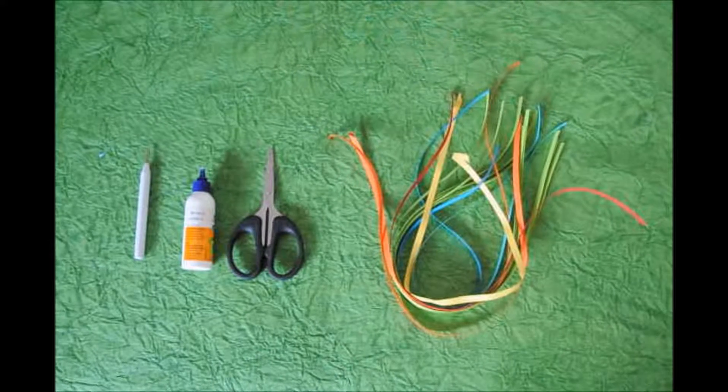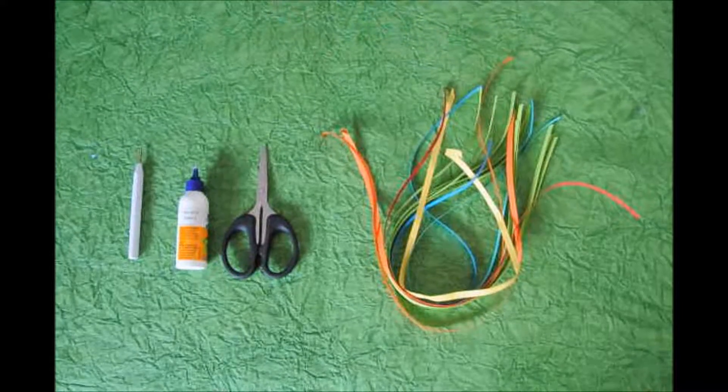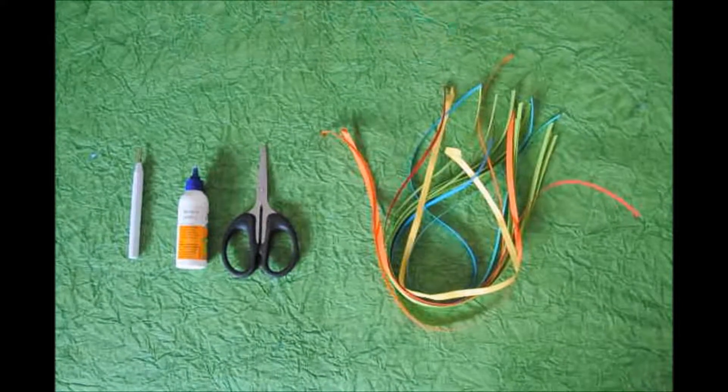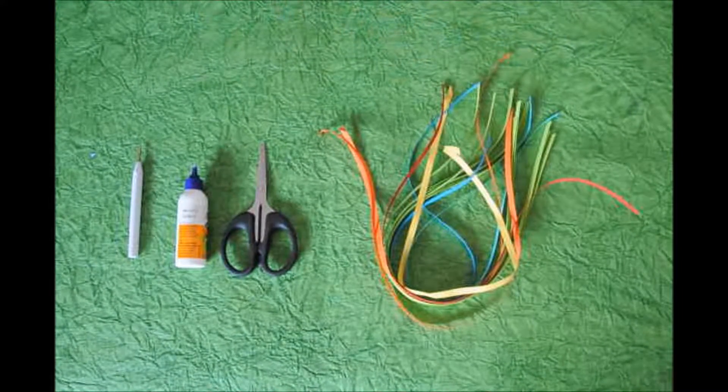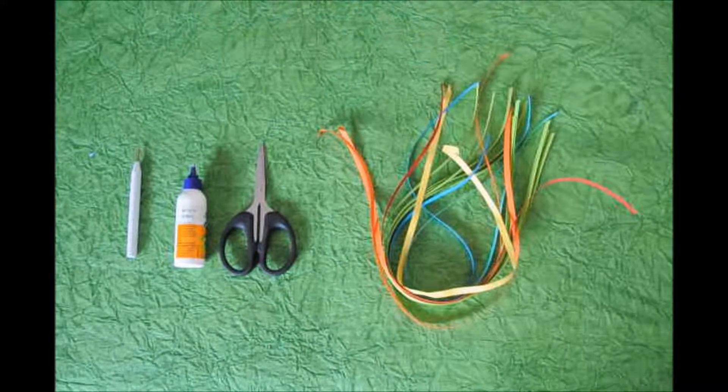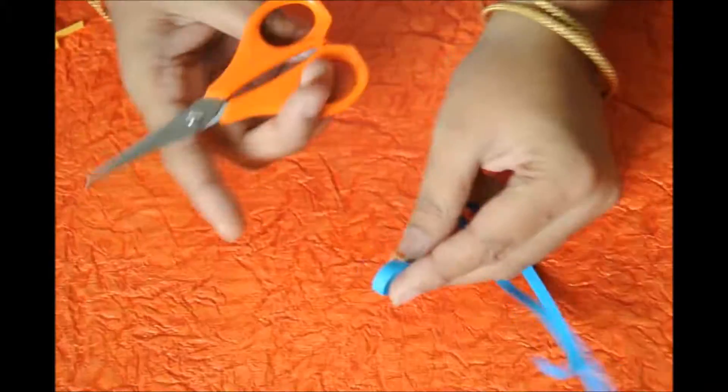The materials required are quillers, scissors, glue and quilling strips. If you don't have a quiller, slit the toothpick on the top and that becomes the quiller. And if you don't have quilling strips, cut A4 size sheet of paper and that becomes the quilling strips.